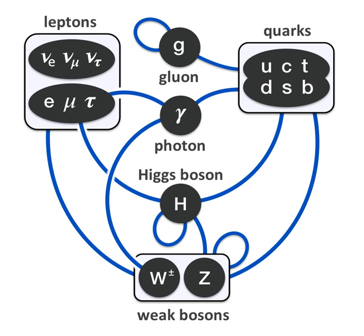It was developed in stages throughout the latter half of the 20th century through the work of many scientists around the world, with the current formulation being finalized in the mid-1970s upon experimental confirmation of the existence of quarks. Since then, confirmation of the top quark, the tau neutrino, and the Higgs boson have added further credence to the Standard Model. In addition, the Standard Model has predicted various properties of weak neutral currents and the W and Z bosons with great accuracy.